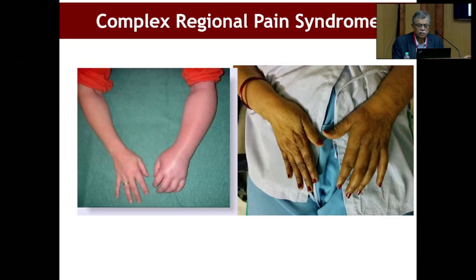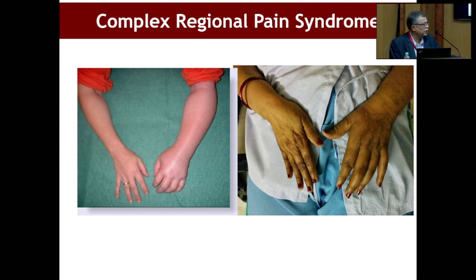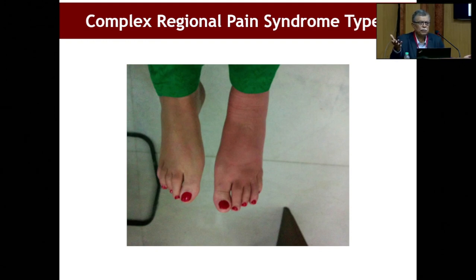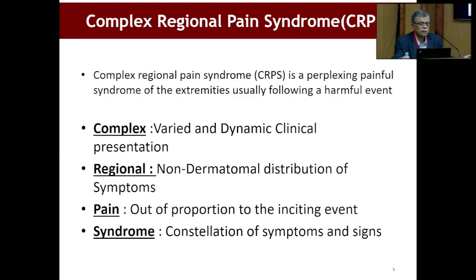This is a classical CRPS — this is the acute phase of CRPS, this is a chronic change, and this is stage 3 where the trophic changes have already set in. And again in the lower limb, this is the acute phase of CRPS. This can follow any trivial trauma — an ankle sprain, a patient may develop CRPS, or a simple fracture with 2-3 weeks of plaster, and the patient comes out with this condition.